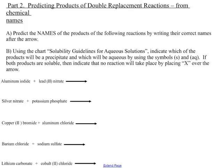Moving on to Part 2 of this lecture. In this part, we will be predicting products of double replacement reactions from chemical names of the reactants. The double replacement is AB + CD → products. These are ionic compounds, so always the cation first — A and D come together with the positive one written first, and then C before B because C is the positive one. So we're just swapping out the names.